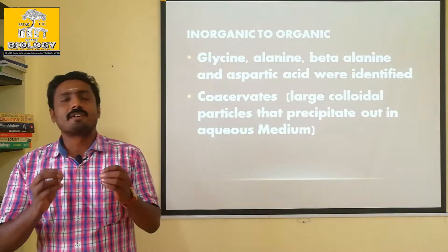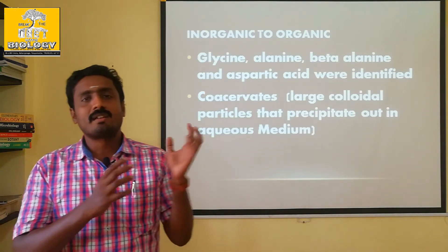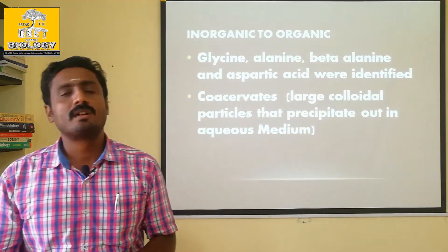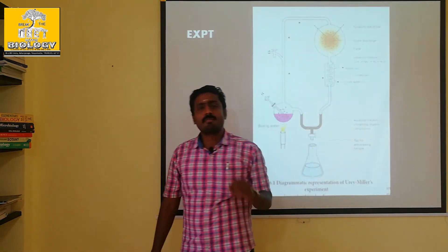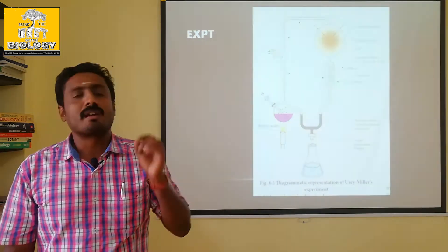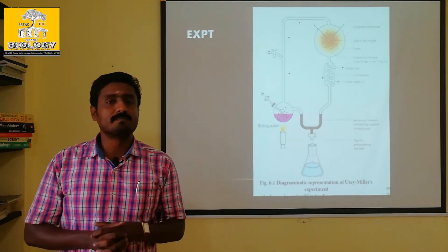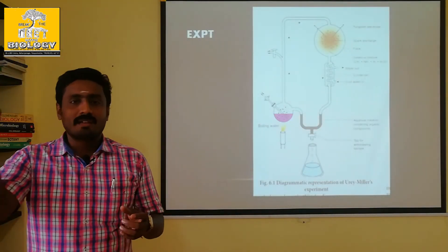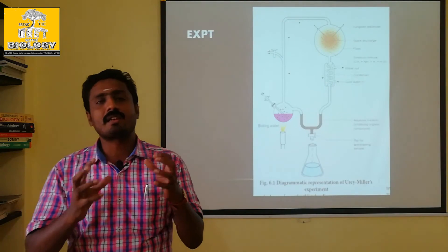The combination forms coacervates. High voltage electricity — like lightning — is given to the gaseous mixture of CH4, NH3, and H2 in the atmosphere. This produces mineral acids and amino acids in the water body, and coacervates in the water body.